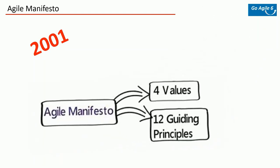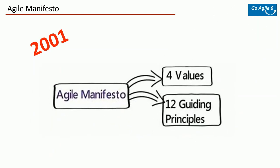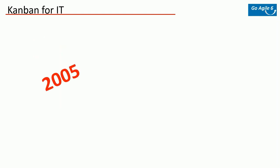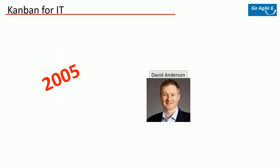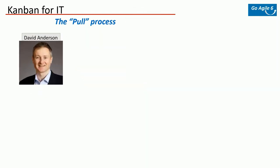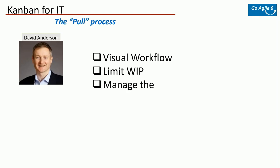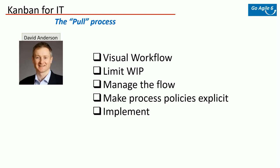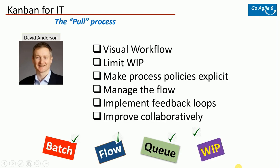From 2001 onwards there were active discussions around agile and the agile manifesto, which we reviewed in previous episodes. Around 2005, one gentleman by name David Anderson took Taiichi Ohno's production system and started applying it in the IT process, coming up with Kanban for IT. He predominantly called it the pull process. He came up with six principles for Kanban in IT: visual workflow, limit work in progress, managing the flow, make the process policies explicit, implement feedback loops, and improve collaboratively.